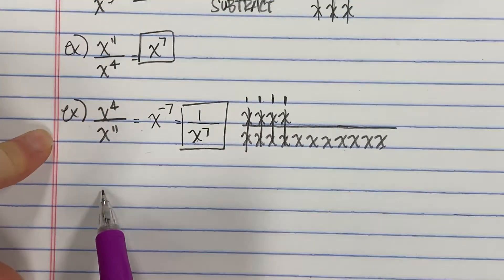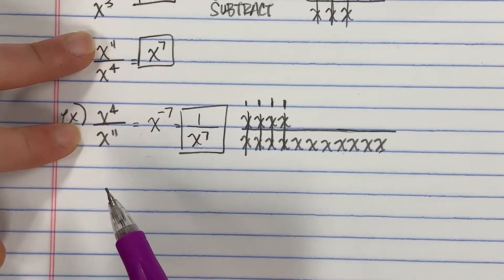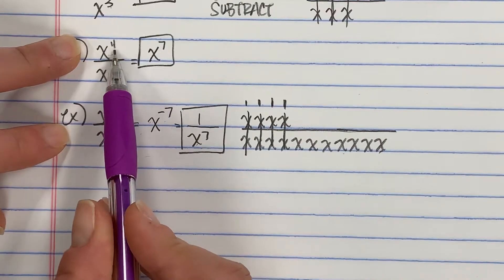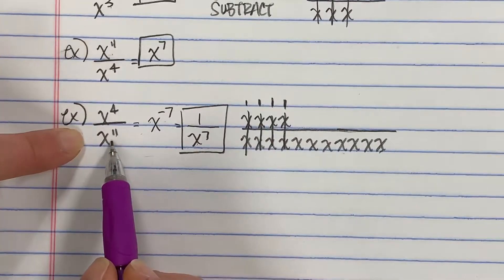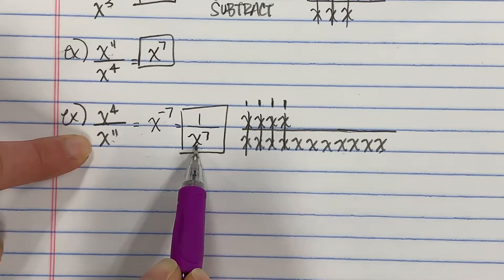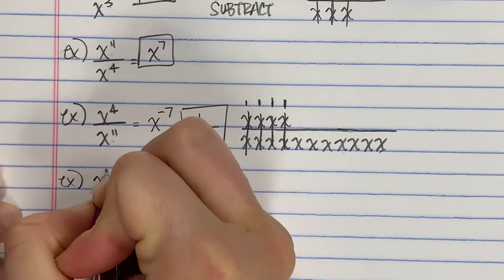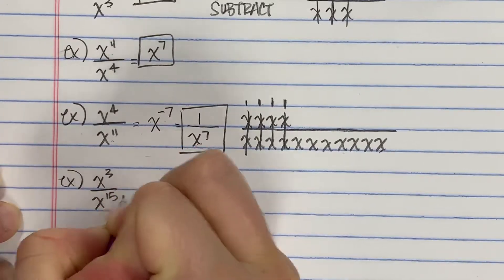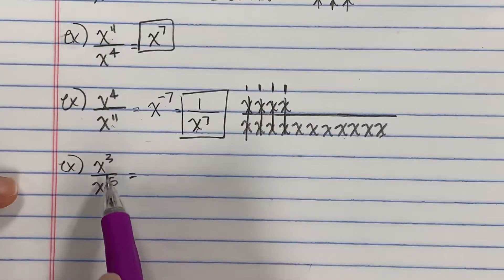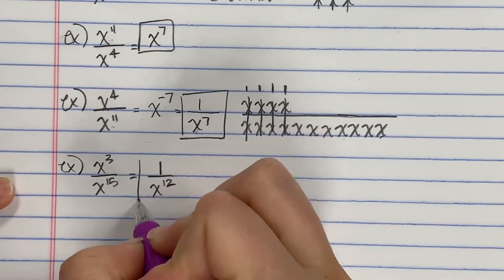It makes sense: you subtract the values — 11 minus 4 gives x to the 7th. There are going to be 7 extras in both problems. The difference is which problem has more x's to begin with determines where the 7 extras end up. So for x to the 3rd over x to the 15th, there are 12 extra x's once you cancel out 3 of them, and they will be in the denominator with a 1 on top.